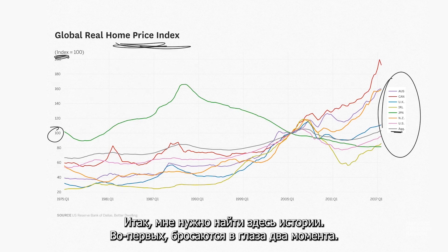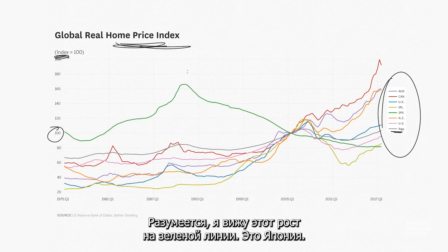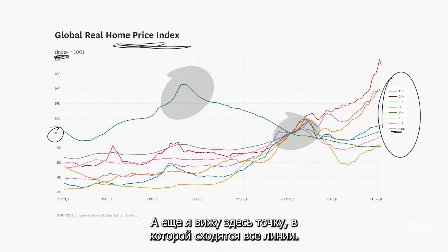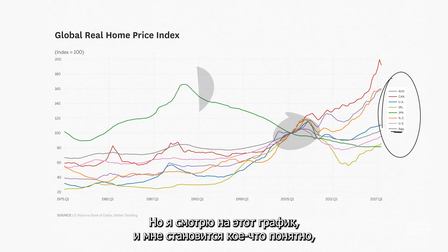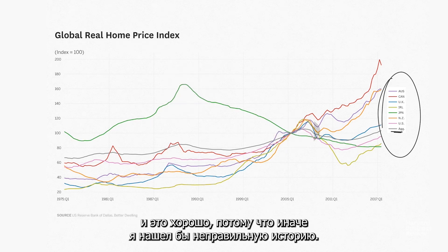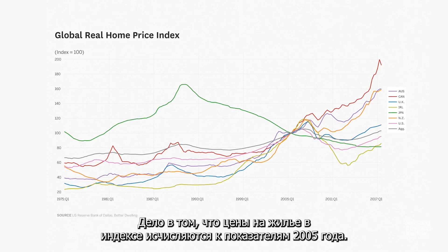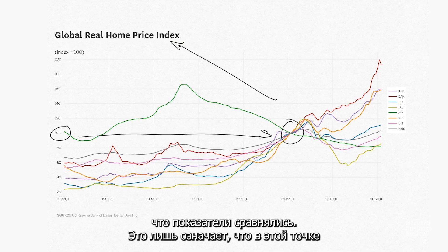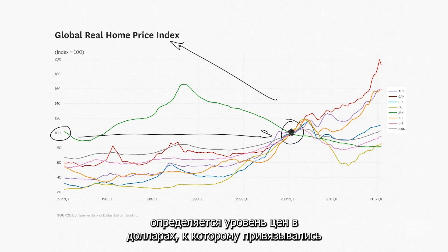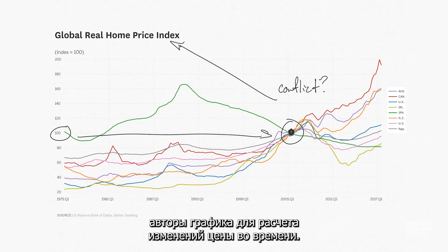The first things I start to notice are a couple of things. I obviously notice that big hump on the green line — that's Japan — and I notice that point where everything comes together. To me, that immediately says those are probably two places where there's conflict. But I realized something as I'm looking at this: these home prices are indexed to 2005. So the fact they come together there in 2005 doesn't mean the prices came together — that just means those are the dollars used to show the change in house prices over time.